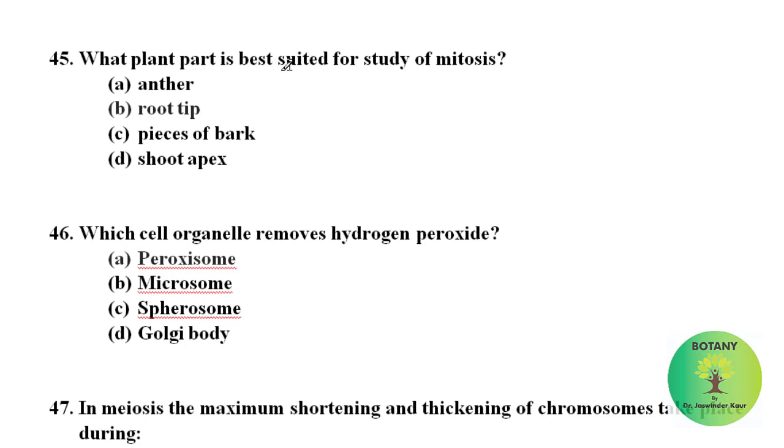What plant part is best suited for study of mitosis? For study of mitosis, normally the onion root tips are used. So we mark here the root tip as answer, as root tip is a rapidly growing part, especially in onions. Thus many cells will be in different stages of mitosis and they are easy to observe.